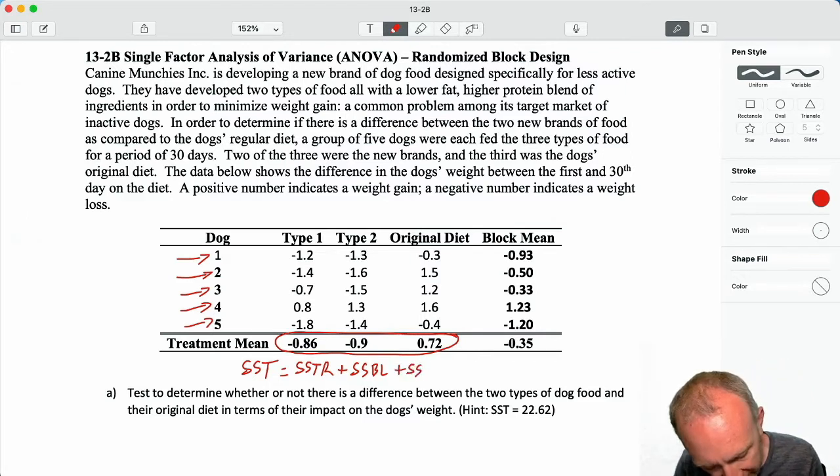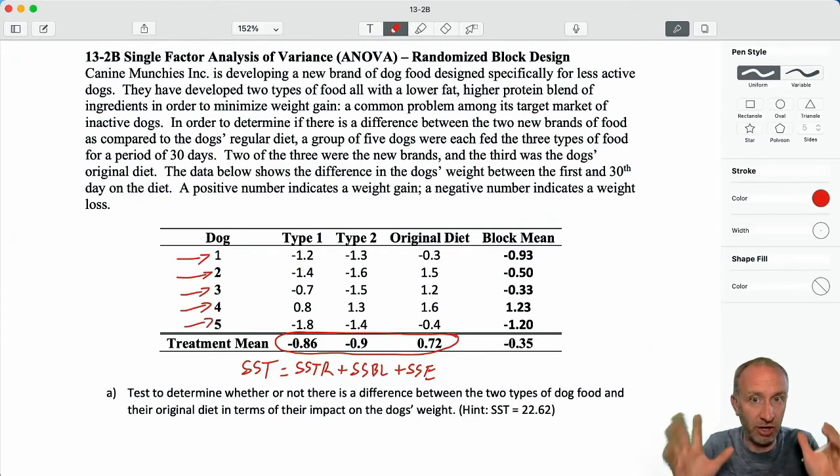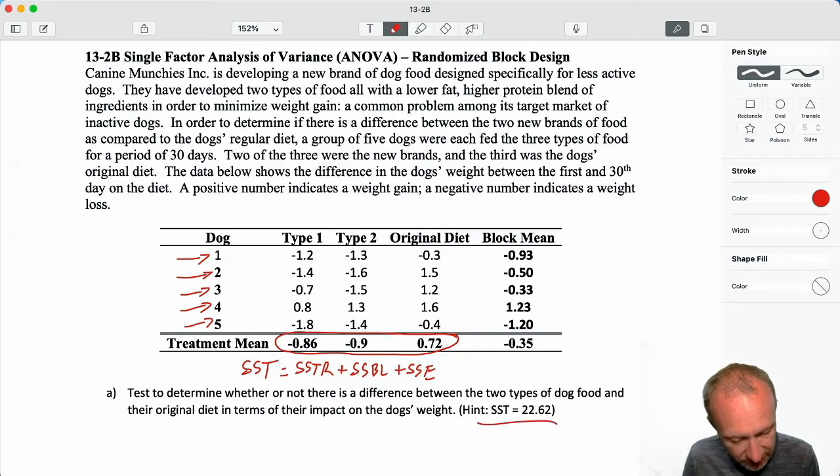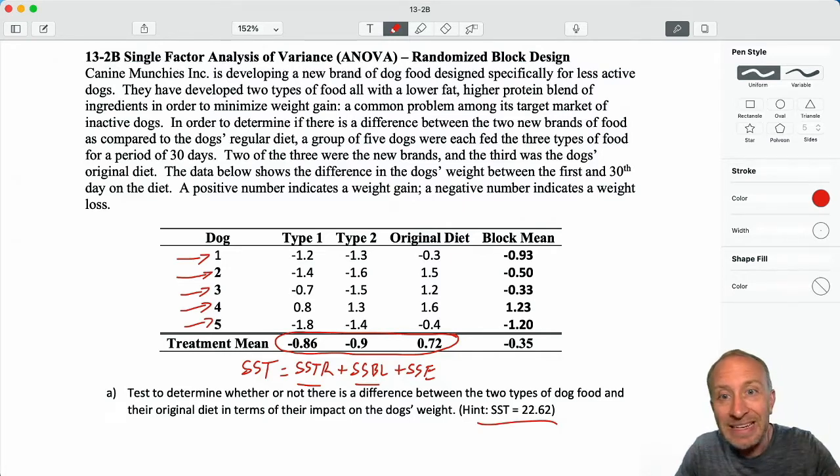And then whatever's left is SSE. Now, the calculation for SSE requires matrix algebra which is not a prerequisite for the course that I teach, so I don't have students calculating SSE from the raw data. I either provide SST or SSE, and you can see here I've done just that, there's SST. So if I give you SST we can calculate SSTR and SSBL, and then we have three out of the four parts, we can acquire the fourth which is SSE. Let's jump into this exercise.